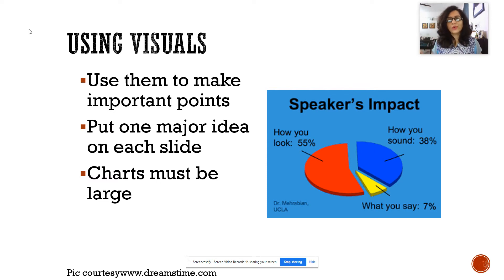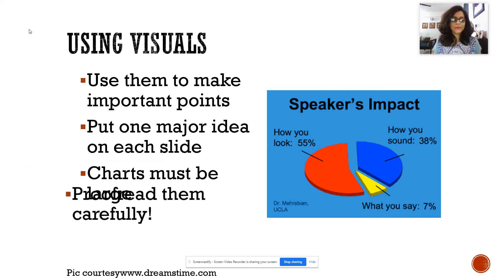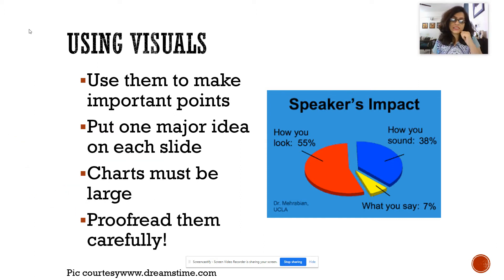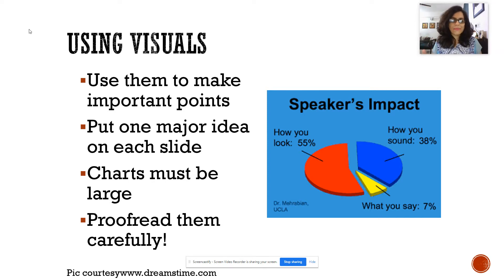You have to make sure that the visual you're using is not too tiny, and if there's text matter on it, that should be legible and visible. Your text matter should also be carefully proofread. There shouldn't be any language errors, any typographical errors, or any spelling errors, because that will create a very bad impression and will show that you have not done your homework carefully.